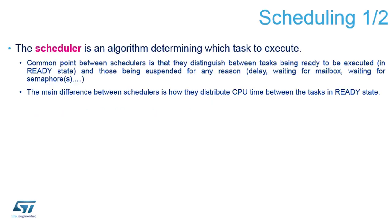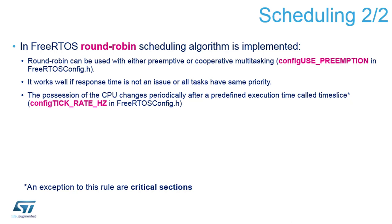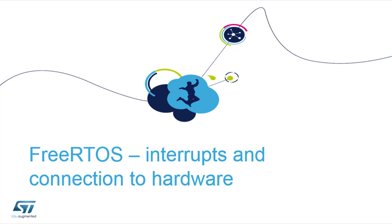The scheduler defines how tasks switch and under which priorities they switch. It is typically triggered by PendSV, which scans all tasks in the ready state and chooses the one with the highest priority. If priorities are equal among tasks, it uses round robin — in FreeRTOS, round robin is implemented for tasks with the same priority. Now let's talk a little more about interrupts and their connection to the hardware.